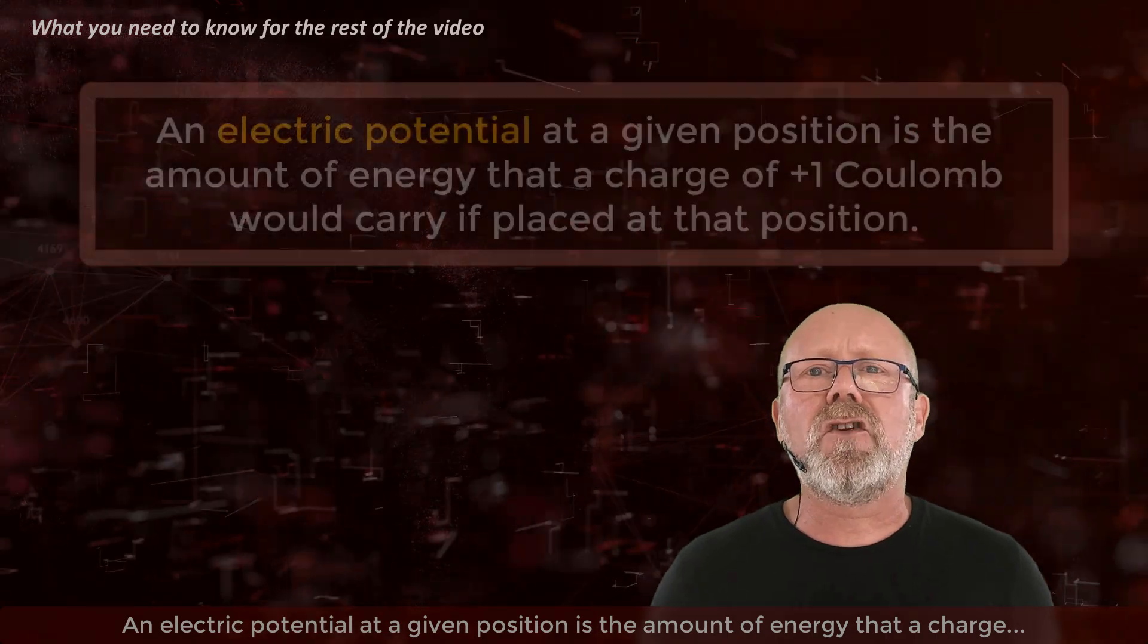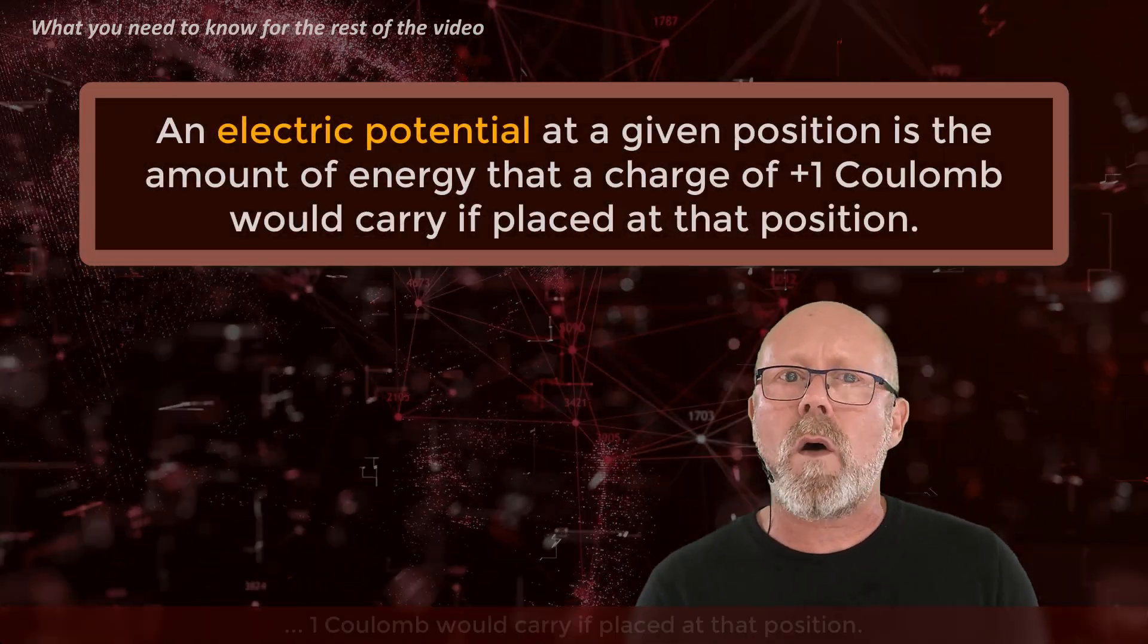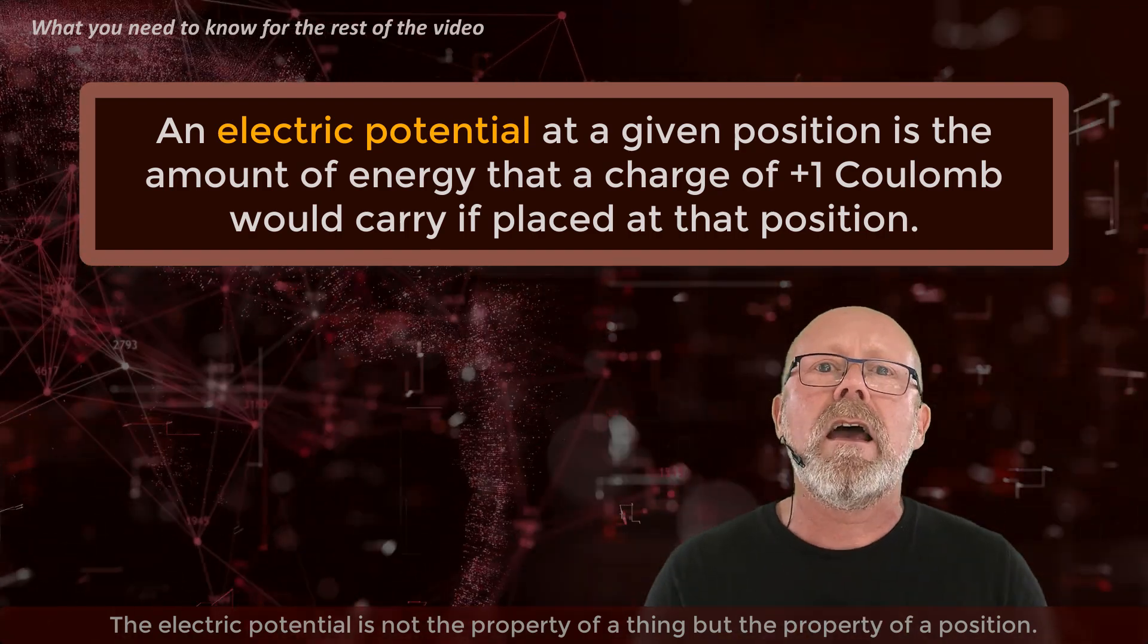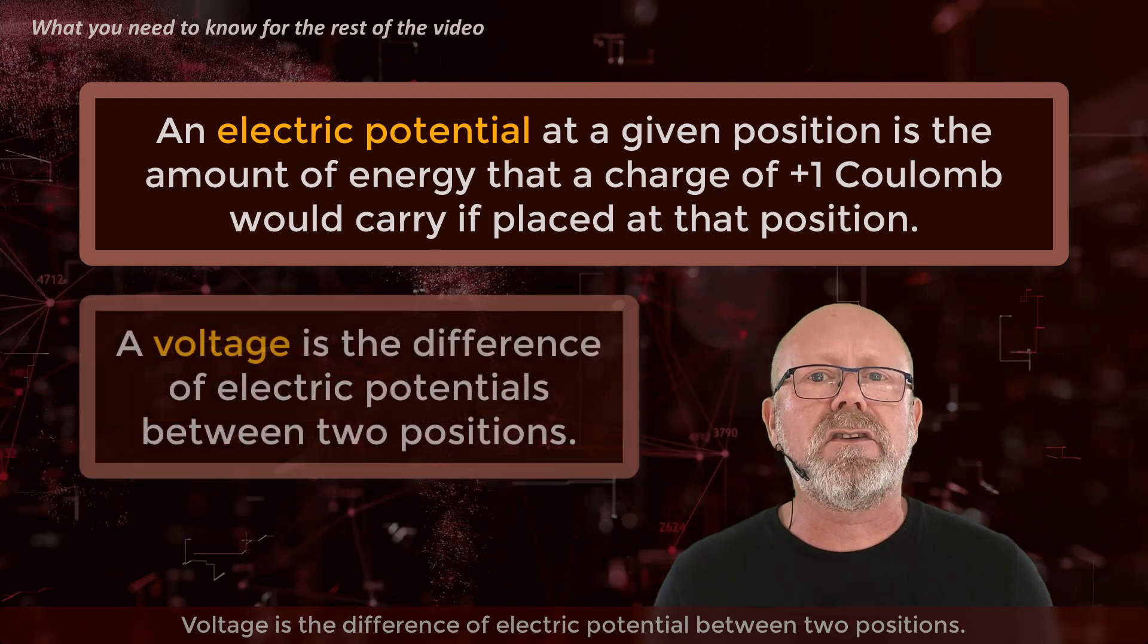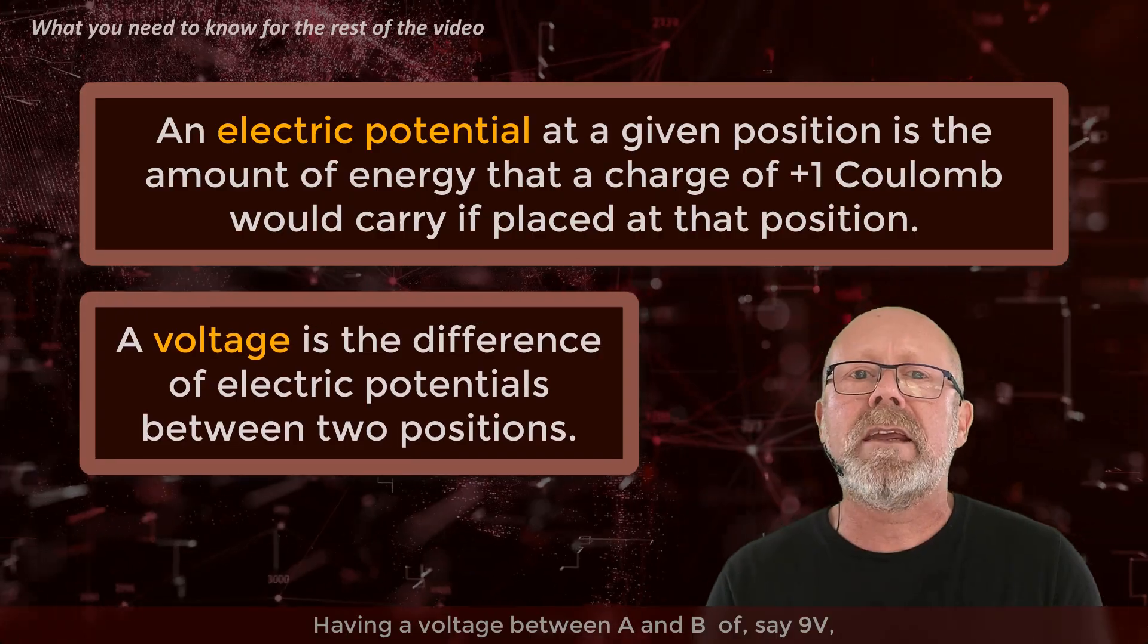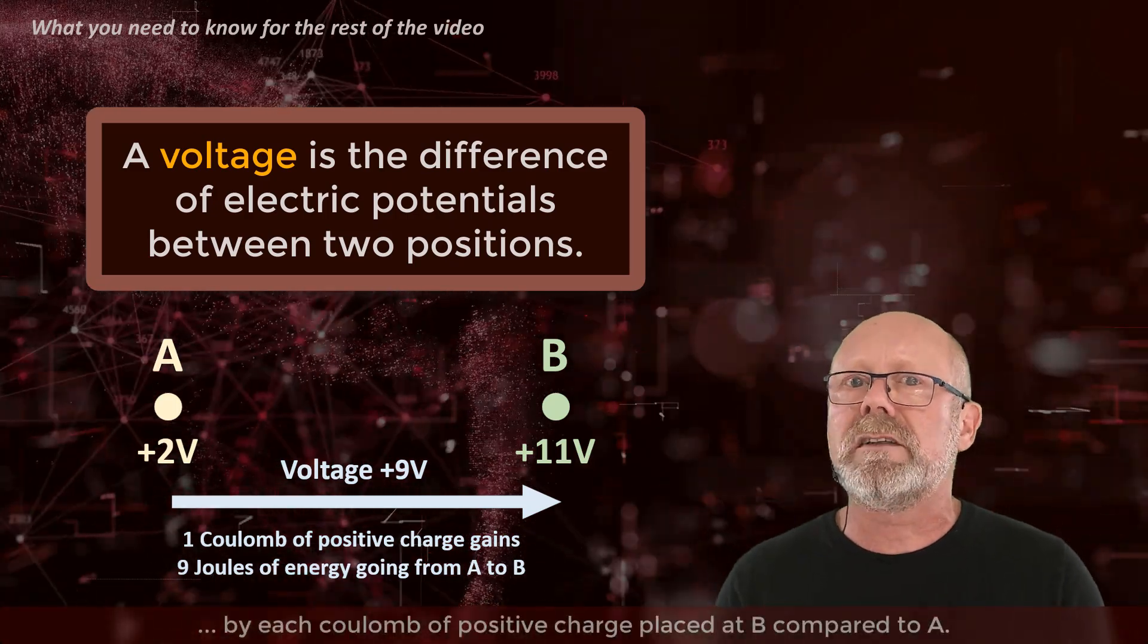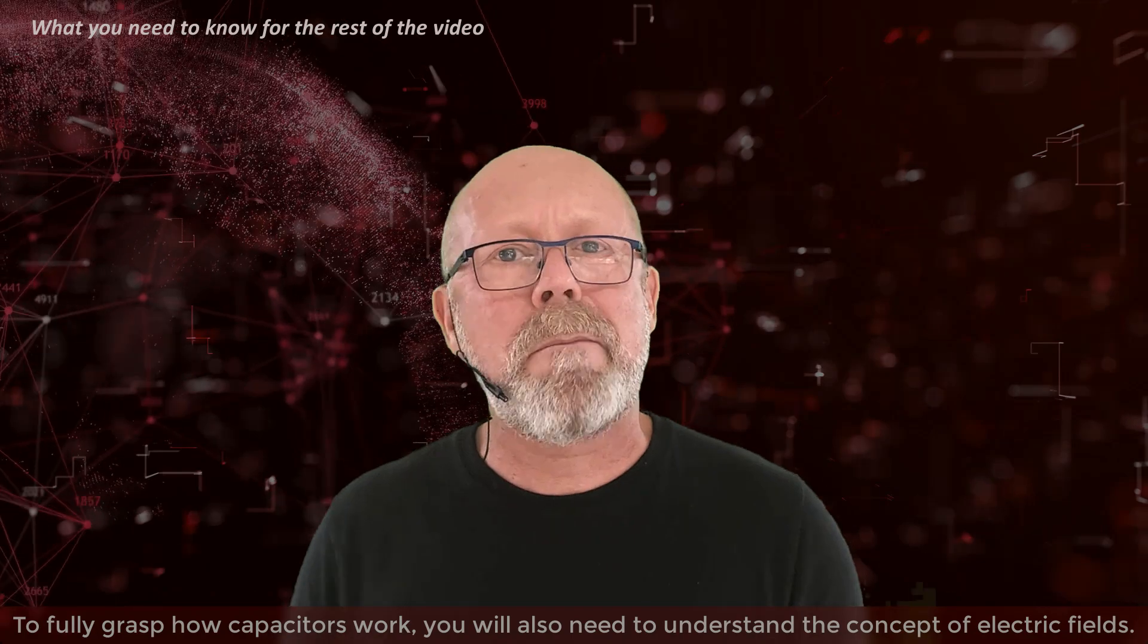An electric potential at a given position is the amount of energy that a charge of one Coulomb would carry if placed at that position. The electric potential is not the property of a thing, but the property of a position. A voltage is the difference in electric potential between two positions. Having a voltage between A and B, say, of plus 9 volts, means that there is an extra 9 joules of energy carried by each Coulomb of positive charge placed at B compared to A.